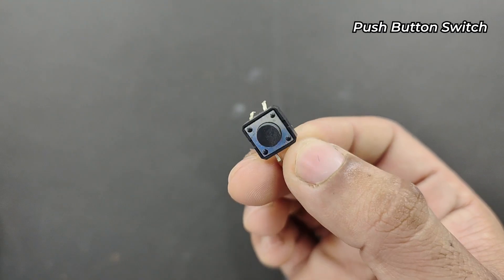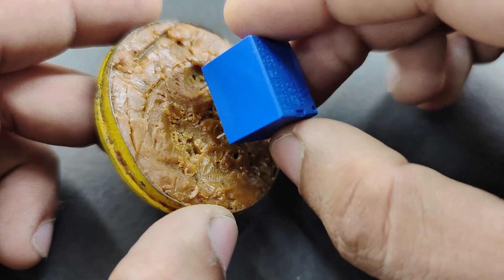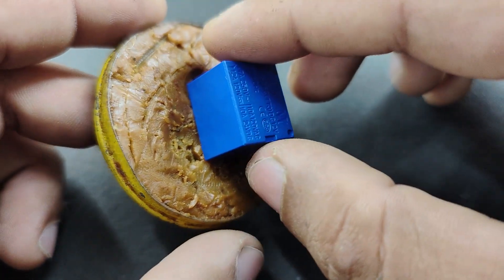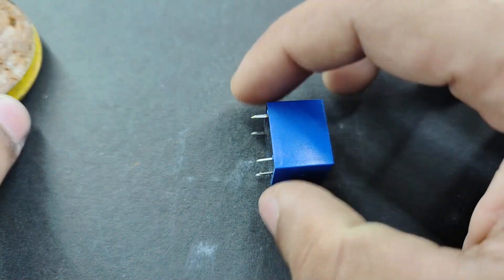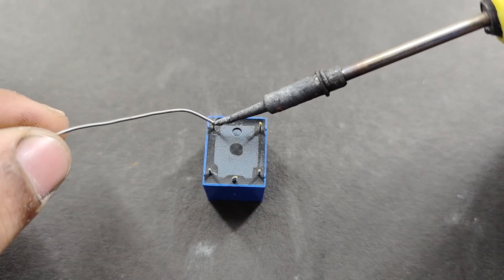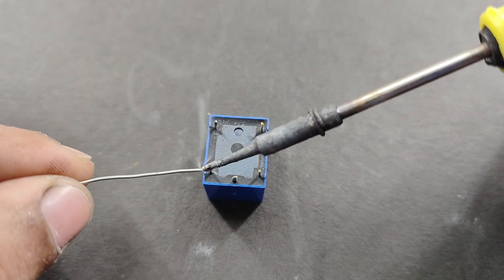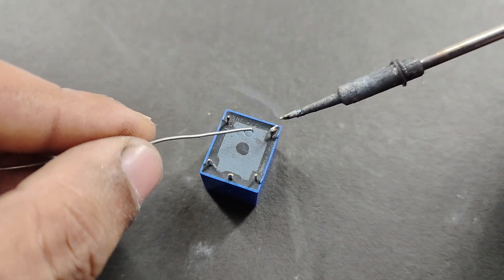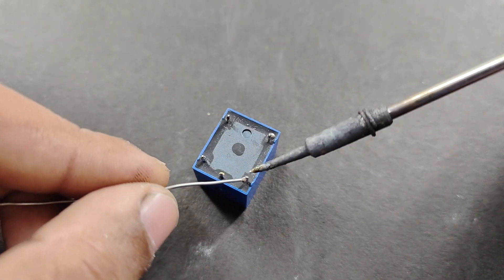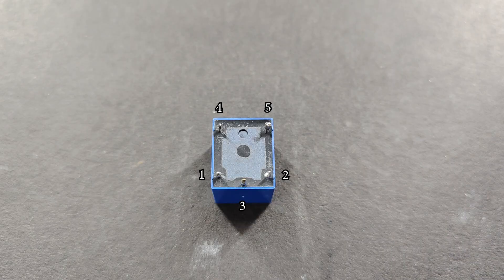First of all, take the relay and dip all 5 pins in the soldering flux so that it would be much easier for soldering. For those who don't know, flux improves soldering by removing a thin oxide coating over the metal surface and spreads the lead more evenly.